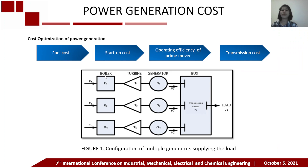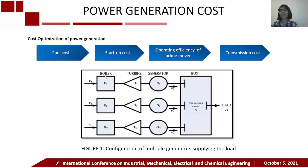There are several factors that affect the cost optimization of power generation: first, fuel cost; second, startup cost; third, operating efficiency of the generator; and last, transmission cost. The total generation power Pn is the sum of the system load power requirement and transmission losses. Figure 1 shows the configuration of multiple generators supplying the load.